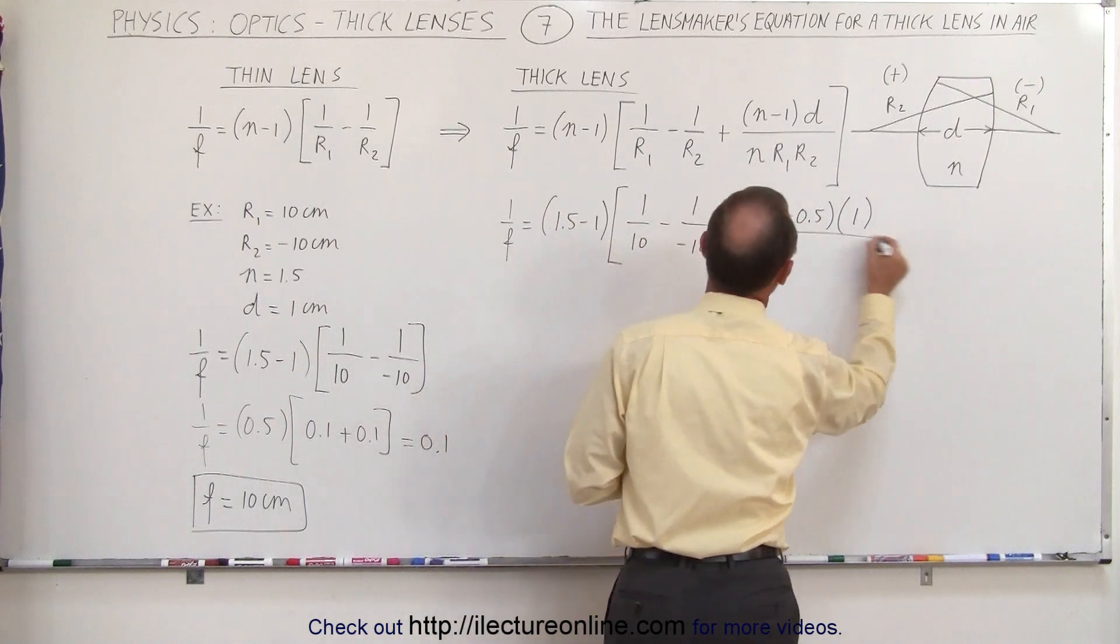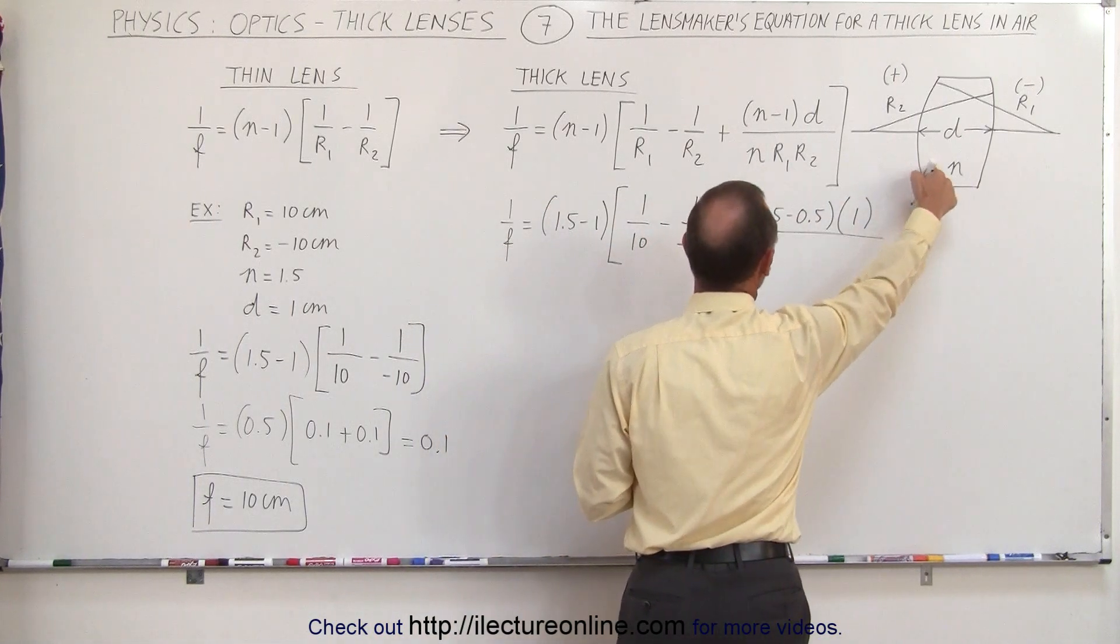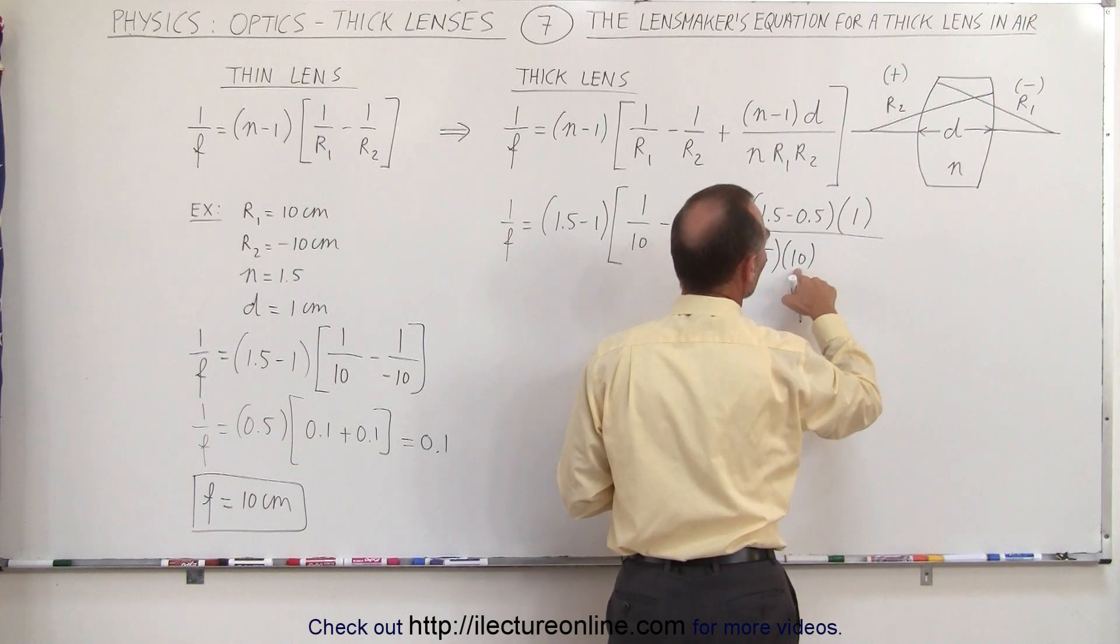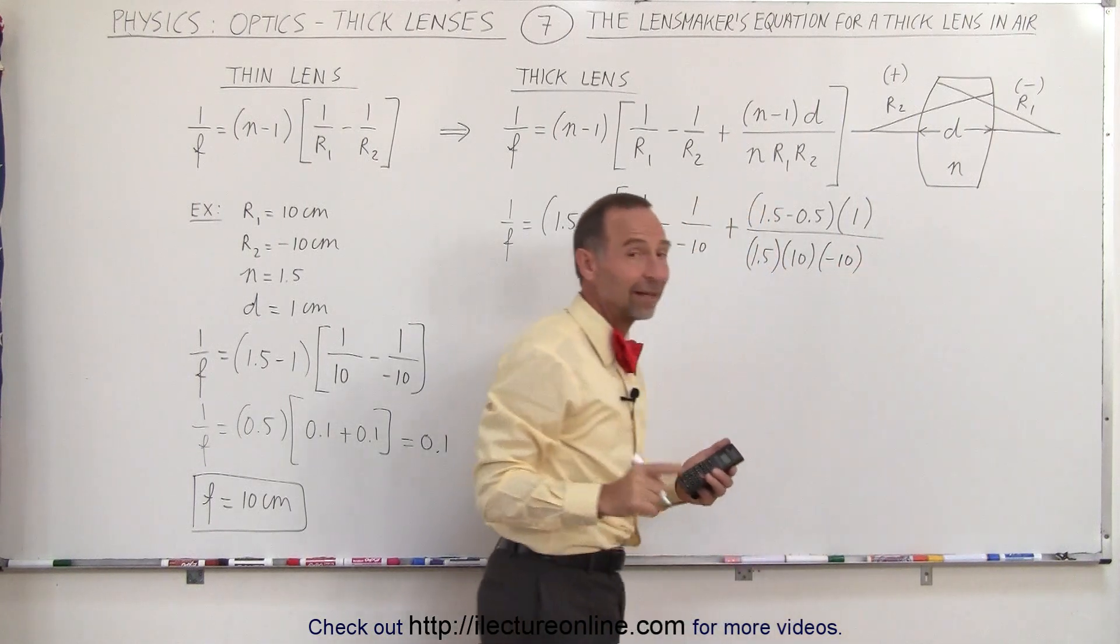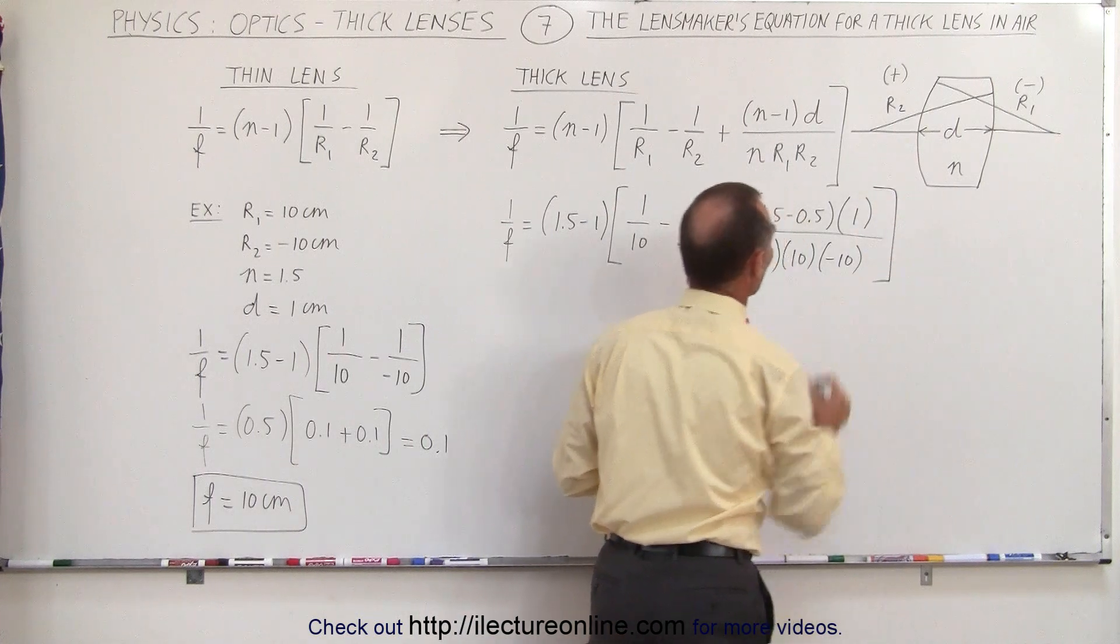0.5 times the distance of 1 centimeter, that's the thickness of the thick lens, divided by 1.5, again that's the index of refraction of the lens material, times 10 for the front side, that's the radius of the front side, times a minus 10, the radius of the back side. So make sure you do indeed plug in the correct signs for R1 and R2.